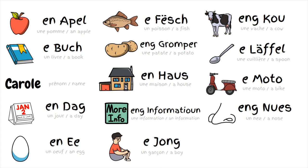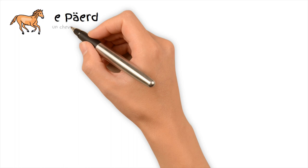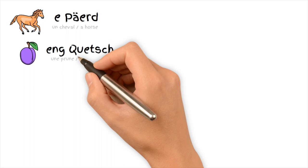N — a tree. P — a pairt. Q — en quetsch.